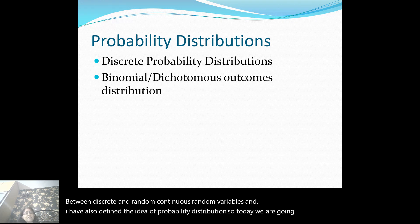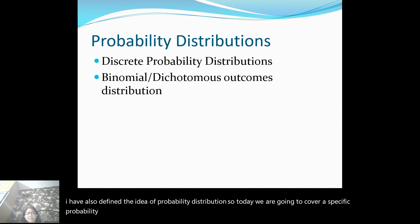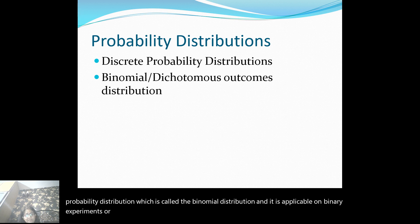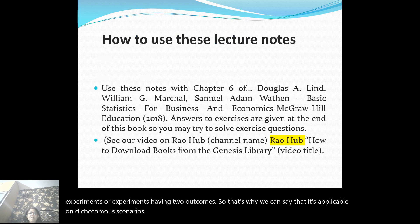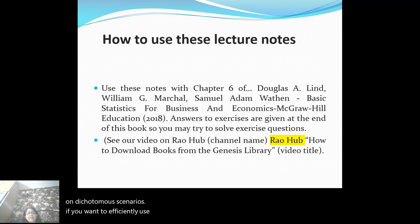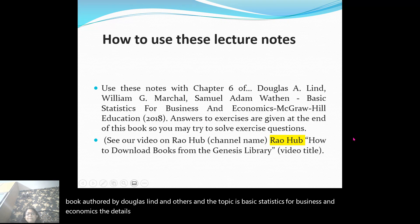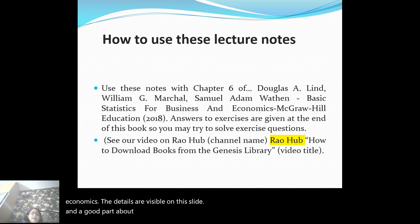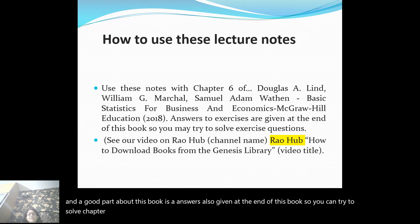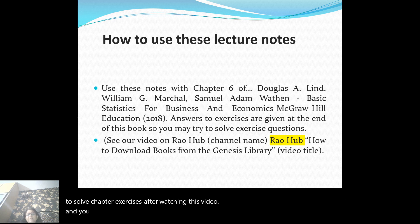Today we are going to cover a specific probability distribution called the binomial distribution. It is applicable on binary experiments or experiments having two outcomes — that's why we can say it's applicable on dichotomy scenarios. To efficiently use these lecture notes, it's highly advisable that you download the book authored by Douglas Linde and others, titled Basic Statistics for Business and Economics. The details are visible on the slide, and answers are given at the end of the book so you can try chapter exercises after watching this video.